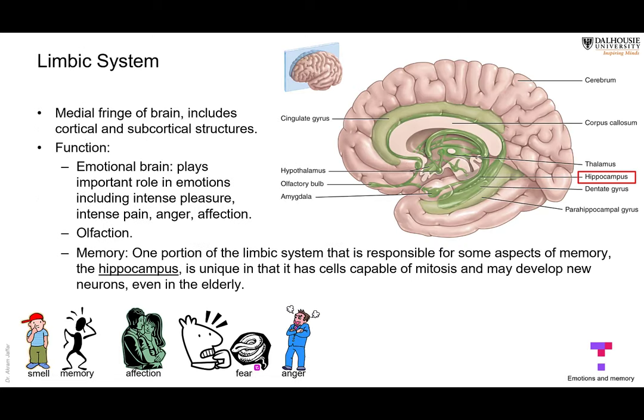The second topic is the limbic system. This is a collection of nuclei, cortical areas, and white matter in the brain — together they constitute the limbic system. Limbus means rim, so it is like a rim around the brain. It includes cortical areas, subcortical areas, white matter, and nuclei.